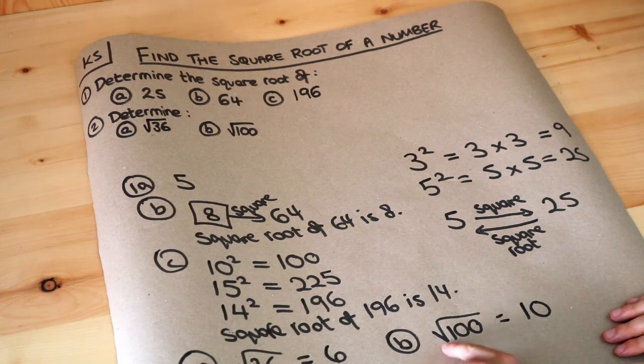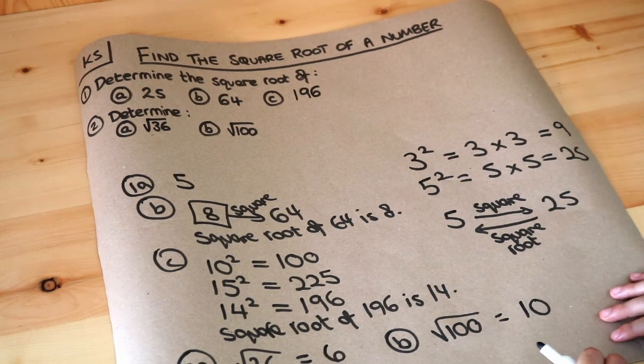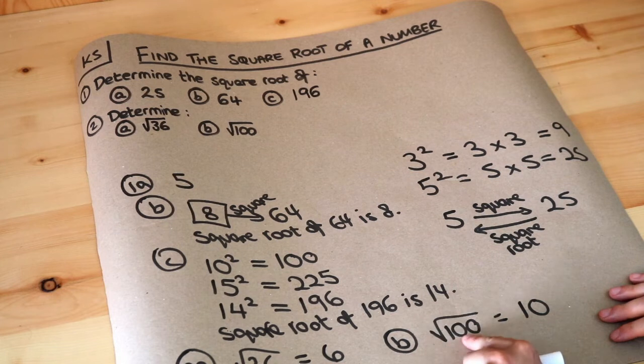A note by the way, we can square root numbers which are not square numbers. So we could square root, for example, 17, it would be 4 point something, we might get a decimal. But if we square root a square number, we're always going to get a whole number.